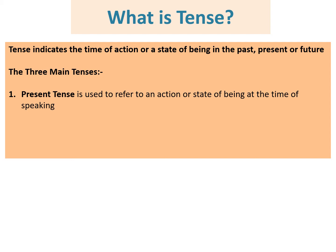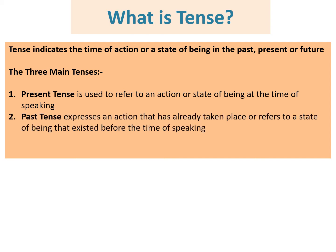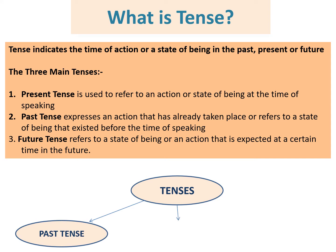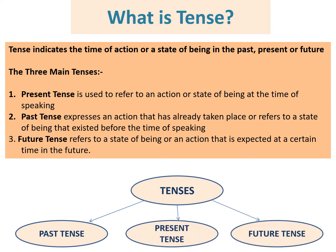Present tense is used to refer to an action or state of being at the time of speaking. Past tense expresses an action that has already taken place or refers to a state of being that existed before the time of speaking. Future tense refers to a state of being or an action that is expected at a certain time in the future.